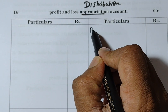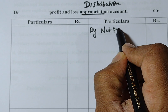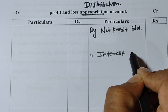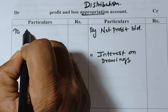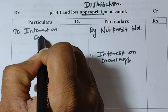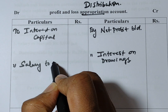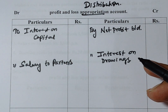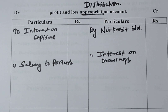It's a very simple problem consisting of only four entries. On the credit side, the first entry is 'By Net Profit Brought Down.' The second entry is 'By Interest on Drawings' made by the partners. On the debit side, we record two entries: 'Interest on Capital' and 'Salary to Partners.' Credit side has income of the concern from partners, and debit side has expenses of the concern from the partners. That is the concept of this Profit and Loss Appropriation Account.